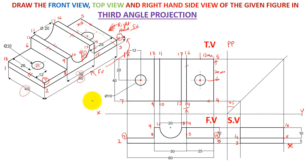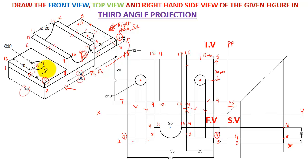After making the side view, we have to check the hidden lines in this figure. When I see from the front view, there are hidden edges from the holes. Students, remember this: whenever you have through holes in your 3D figure, you always have hidden edges. In this case, the complete holes are visible from the top view, so from the top view I take projections towards my front view to make hidden lines there.